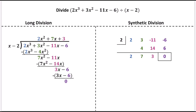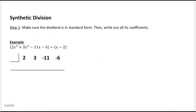Let's look more closely at synthetic division and see what the steps are. First, you want to make sure your dividend is in standard form — all terms present and in order: cubic, squared, linear, and constant terms. Once it's in standard form, we focus in on the coefficients of the variables and write them out as the first row in our synthetic division table.